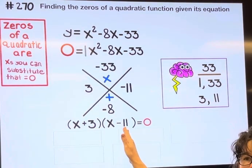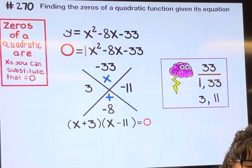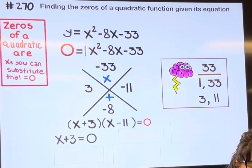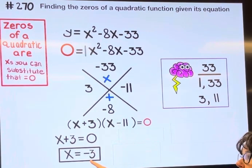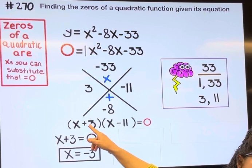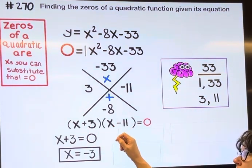So to find what number makes x plus 3 equals 0, set it equal to 0 and solve, and I get negative 3. Negative 3 plus 3 is 0, negative 3 minus 11 is negative 14, and 0 times negative 14 is 0.